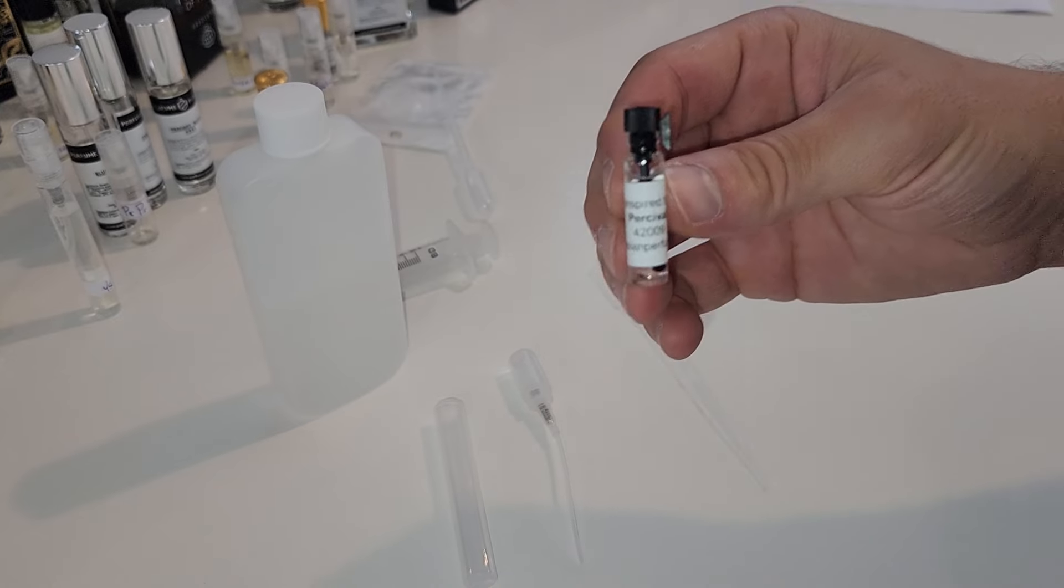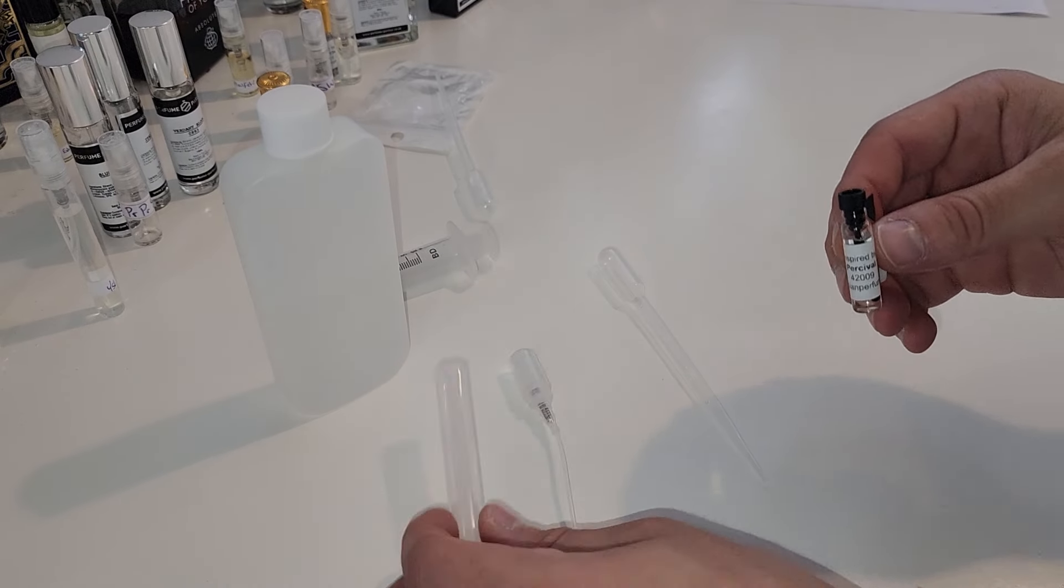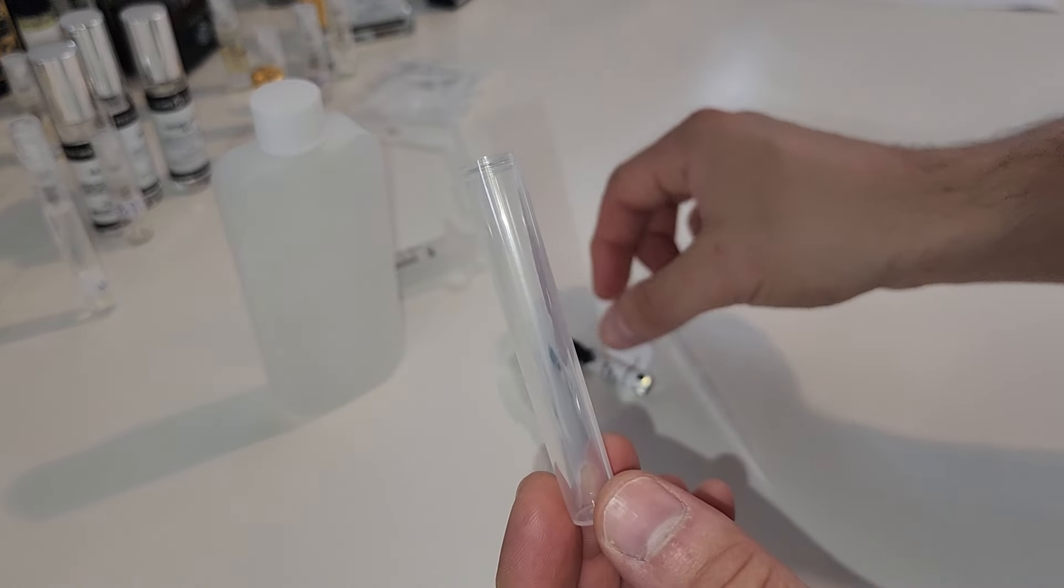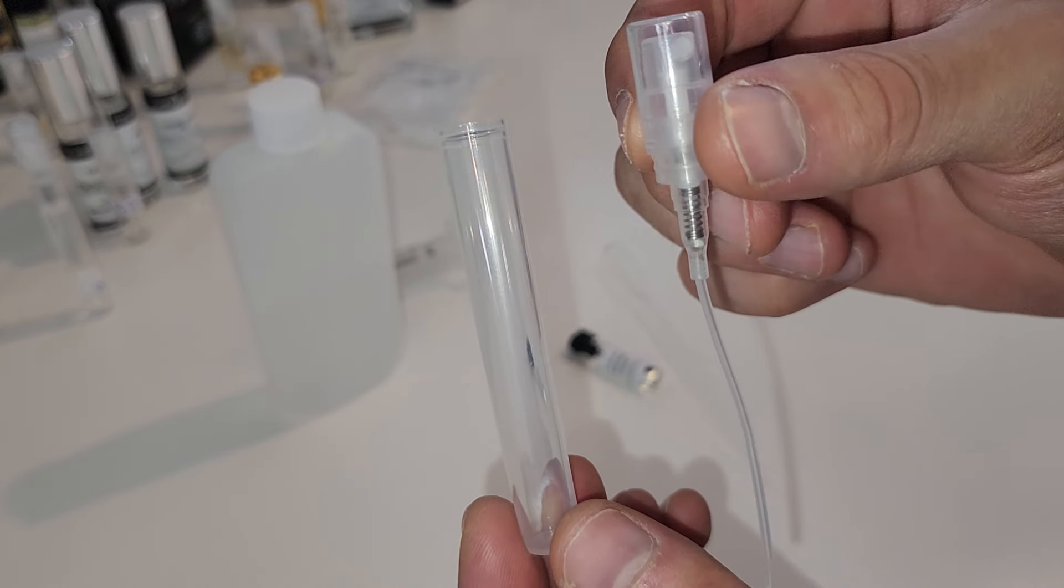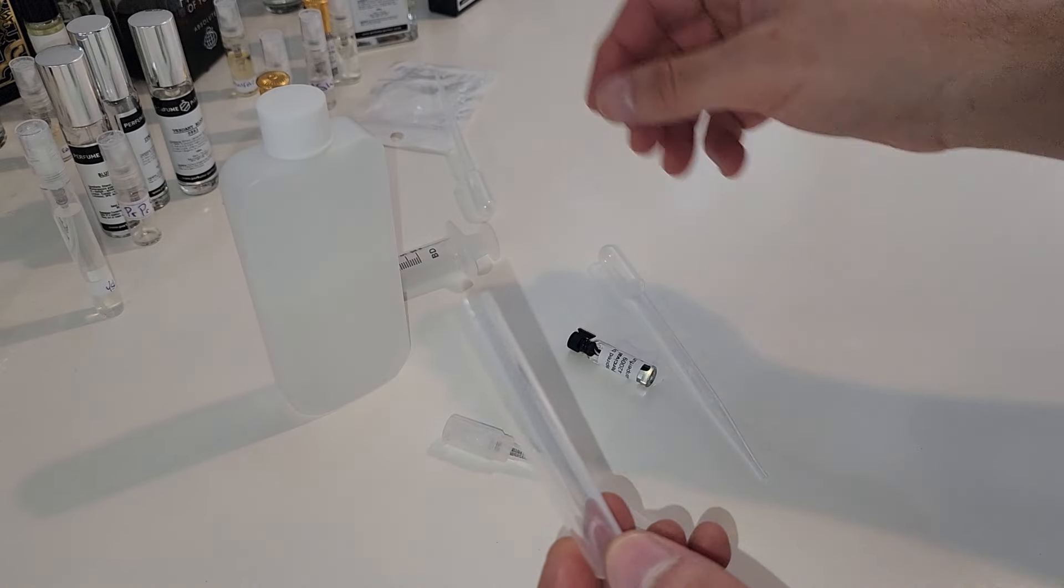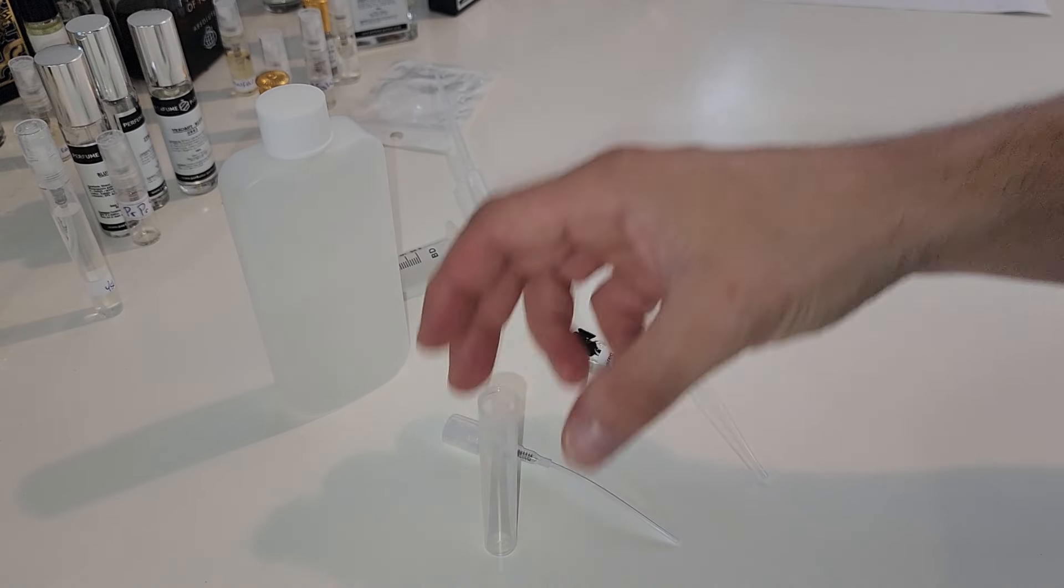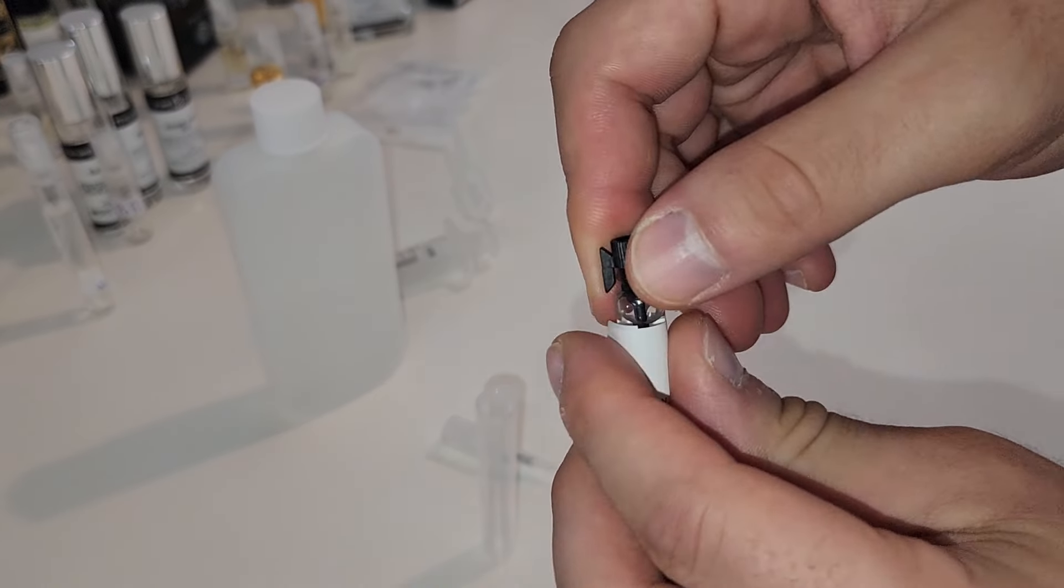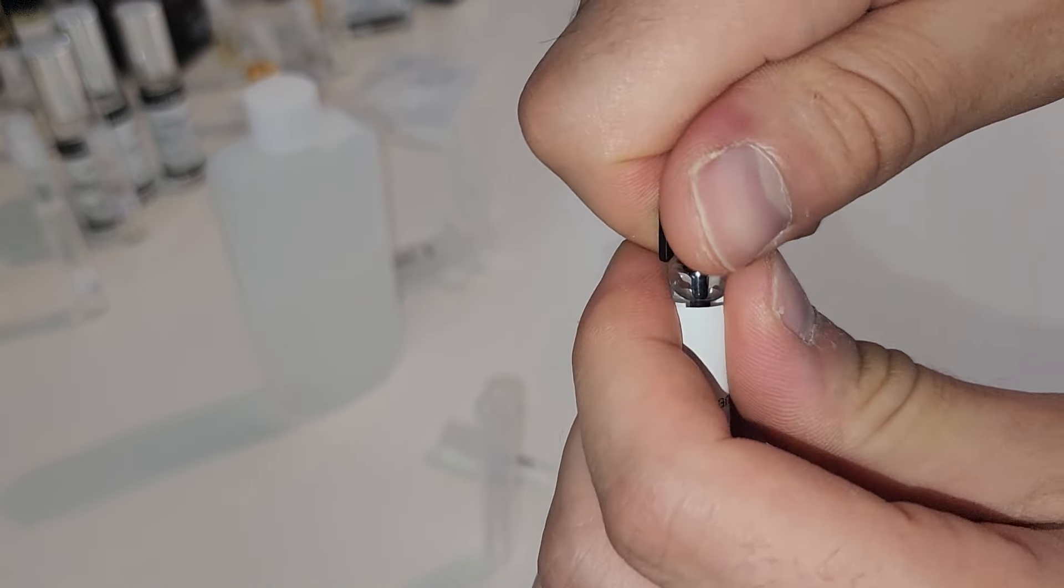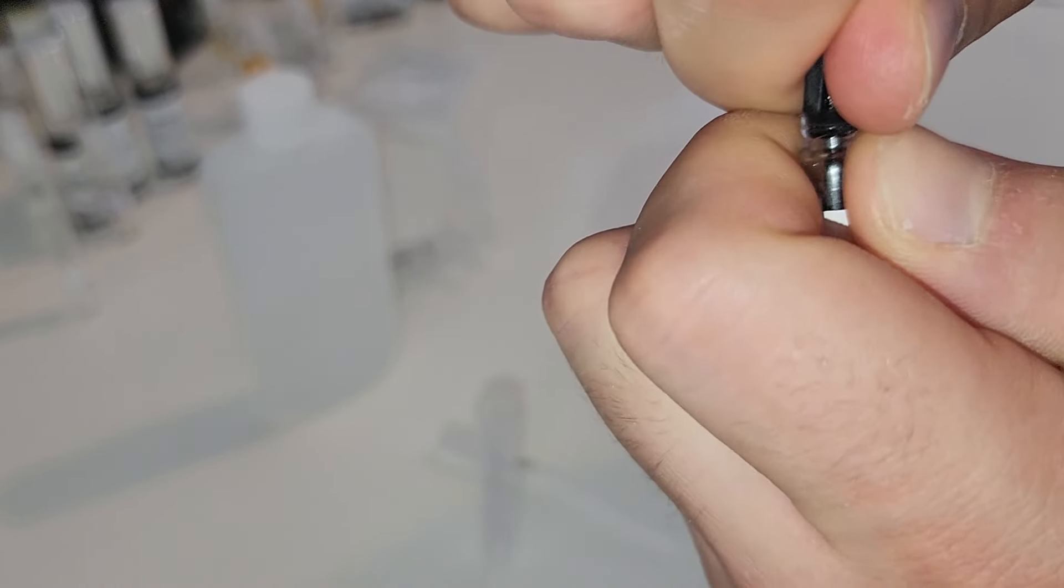So all we need to do is add this oil into our container or spray bottle like we have been doing if you've been watching all my previous videos. Add the alcohol to it and see what we've got. So let's do it. We've got a one milliliter bottle or glass decant here of the concentrated oil. Let's crack it open without spilling any.